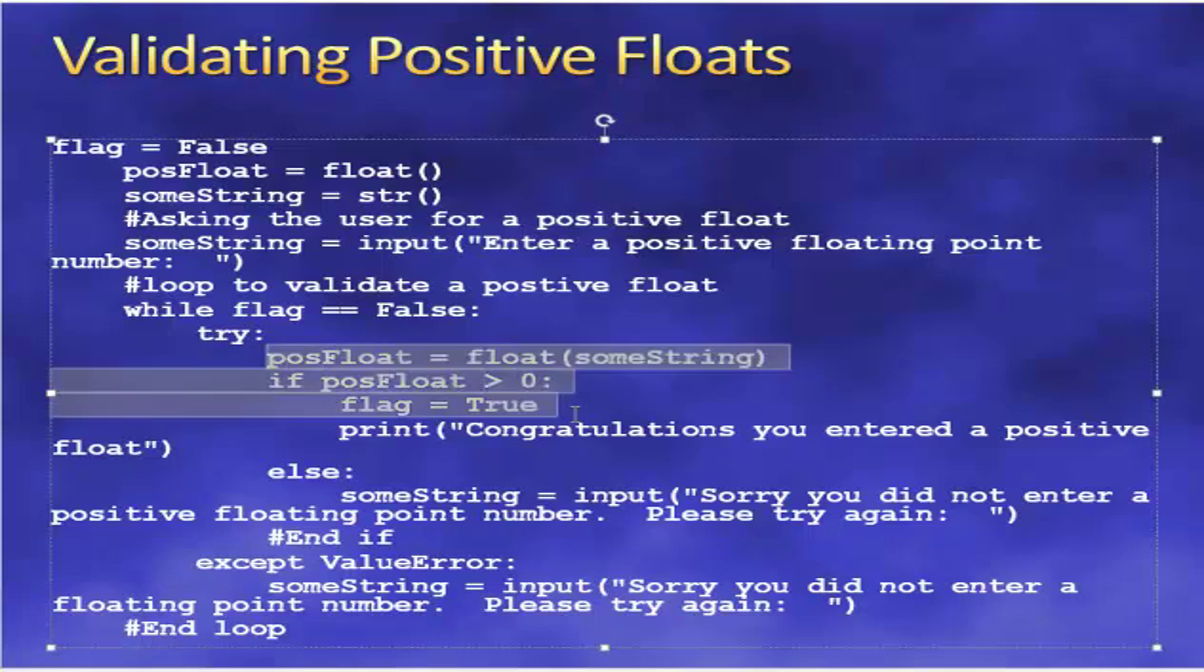How do we do positive floats? This is where it gets yet a little more complicated. You can see here in our variable declarations, we have a float and a string. Next line, we ask the user for that value, enter a positive floating point number. Now we're into our try catch block. Once again, much like the previous slides, if we're able to successfully convert, then we'll check for if that number is positive with the next line, if pass float is greater than zero.